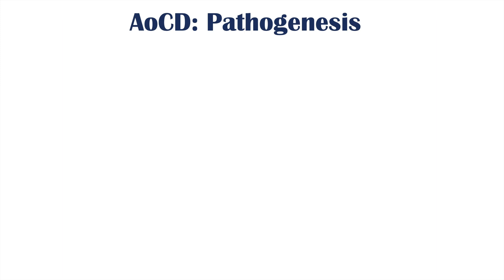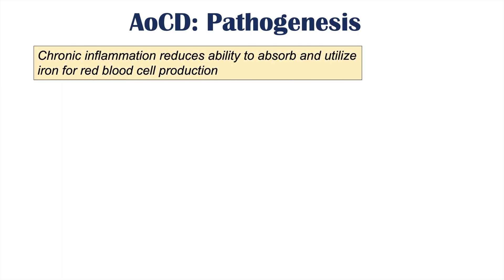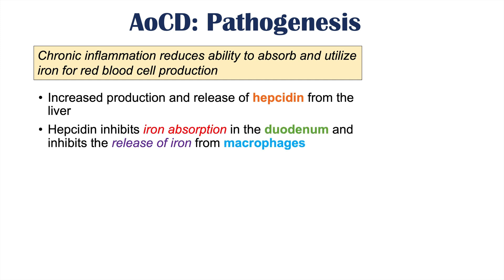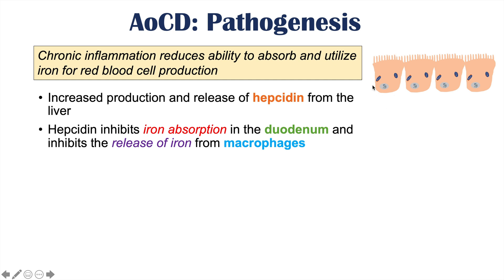The pathogenesis of anemia of chronic disease all comes down to chronic inflammation reducing the ability to absorb and utilize iron for red blood cell production. There is increased production and release of hepcidin from the liver. Hepcidin is a hormone responsible for regulating iron absorption and utilization. It inhibits iron absorption in the duodenum — the first part of the small intestine — and inhibits the release of iron from macrophages. Looking at this diagram, these are enterocytes, the cells in the duodenum responsible for absorption of nutrients like iron.